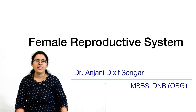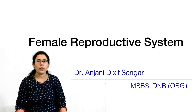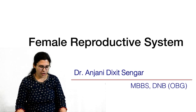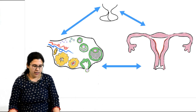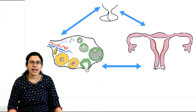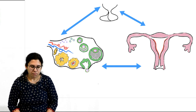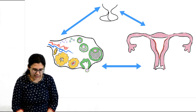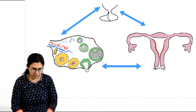Hi friends, I am Dr. Anjini Dixit Senga. Today we are going to discuss the female reproductive system — specifically the ovarian cycle, uterine cycle, and how they are interconnected with each other. So let's start with the story.